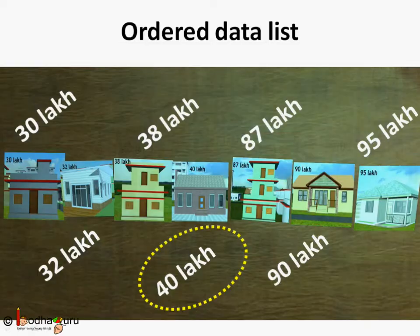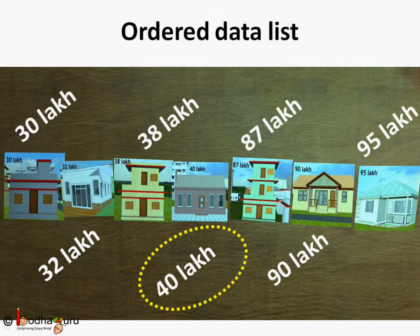So houses with prices 30, 32, and 38 lakhs were less than the median value, and the houses with prices 87, 90, and 95 lakhs were more than the median value.